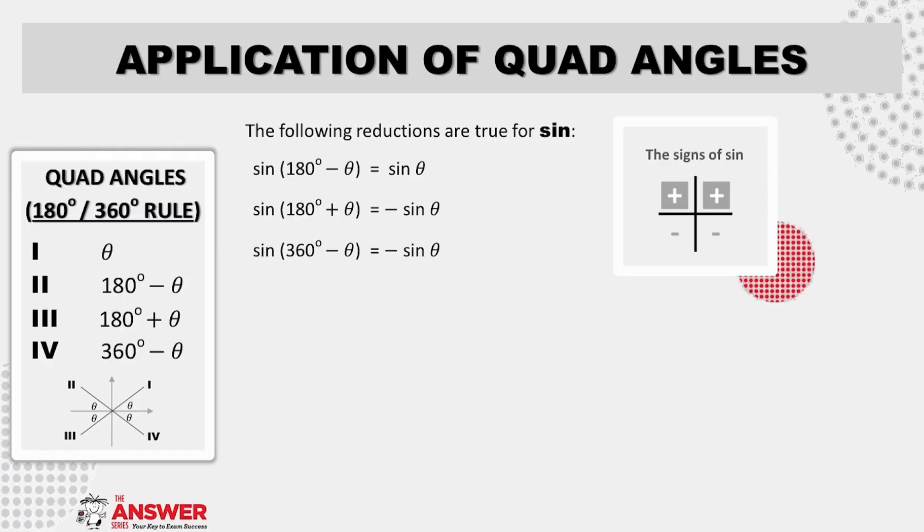We'll start here by looking at sine. Remember, sine is positive above the X axis where Y is positive, so positive in the first and second quad. And negative below the X axis where Y is negative, so negative in the third and fourth quad. The sine of a second quad angle will therefore reduce to a positive ratio of the acute angle made with the X axis, also known as the reference angle. The sine of a third and fourth quad angle will each therefore reduce to a negative ratio of this reference angle.